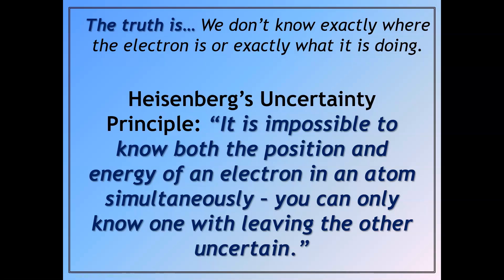...that means you're going to disturb the position of the electron. If you try to figure out the position of the electron, you're going to change the energy of the electron. So it's not possible to know both at the same time. And that's what Heisenberg's uncertainty principle is.